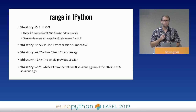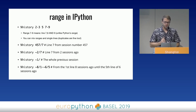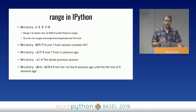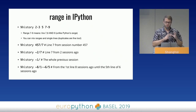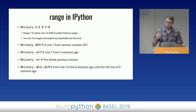So IPython accepts a different notation. You can use a tilde character prefix to say how many sessions before the current one you want to reference. In one example, I'm printing line number 7 from two sessions ago. You can also provide the session number and skip the range parameter, in which case IPython will print the whole session. Finally, you can provide a range across multiple sessions — for example, printing history from line 8 eight sessions ago until line 5 six sessions ago.